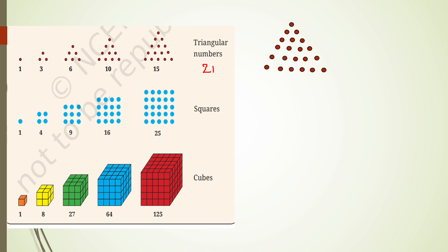For squares — 1, 4, 9, 16, 25 — 1 squared is 1, 2 squared is 4, 3 squared is 9, 4 squared is 16, 5 squared is 25. Then 6 squared is 36, so the next number is 36.